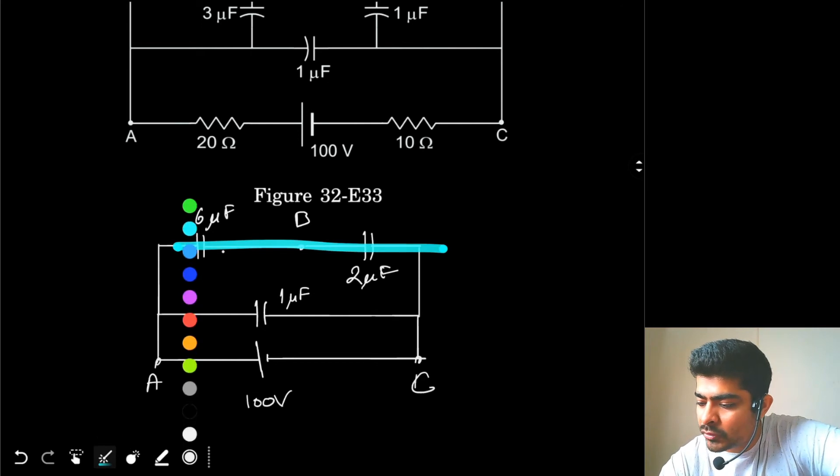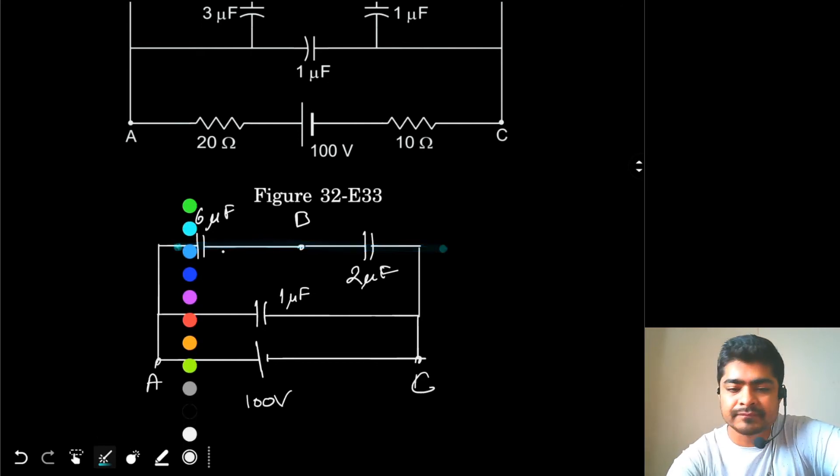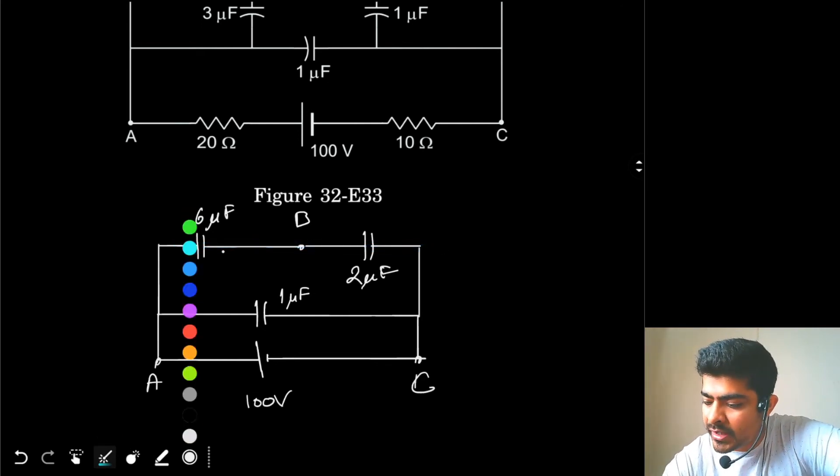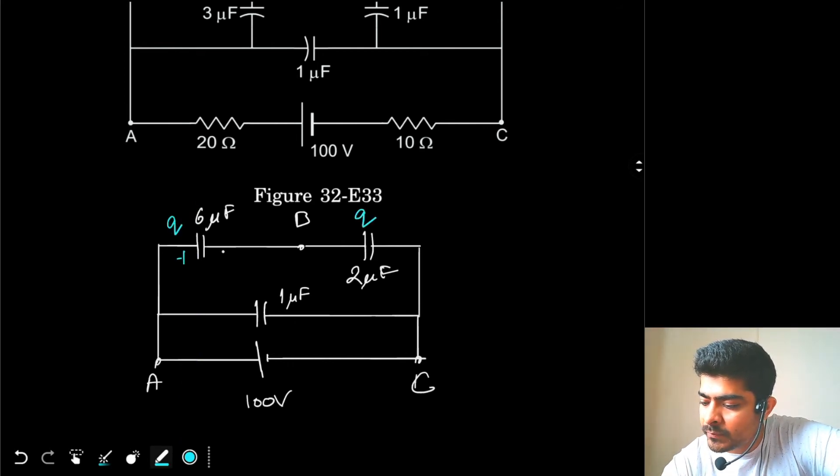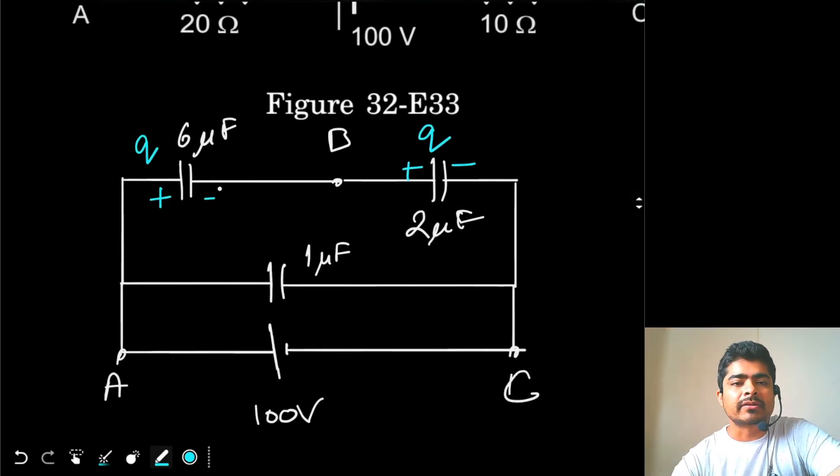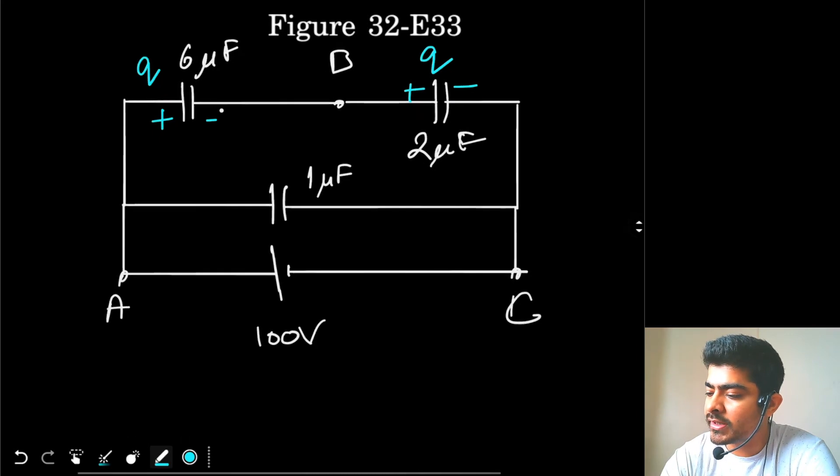Both of them should have same charge. This is charge q, this is also having charge q, plus minus, plus minus. So this is your charge distribution. So if you know the value of q, we can find the potential difference between B and A and B and C easily now. So let's find q.